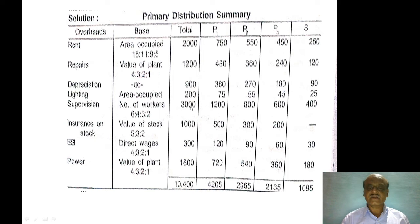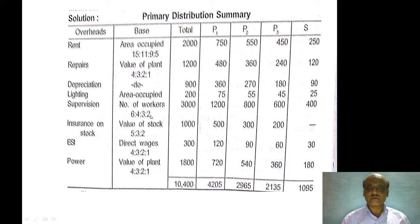Total is 15. So rupees 3000 divided among the ratio gives: 200 multiplied by 4 for P1, 200 multiplied by 3 for P2, 200 multiplied by 2 for P3, and 200 multiplied by 1 for S, giving values of 800, 600, and 400. This is the supervision salary apportionment.